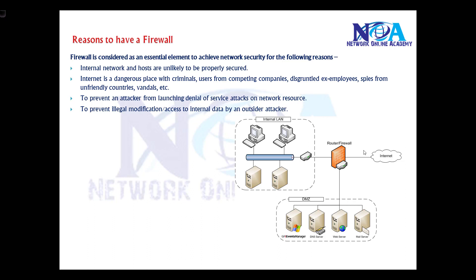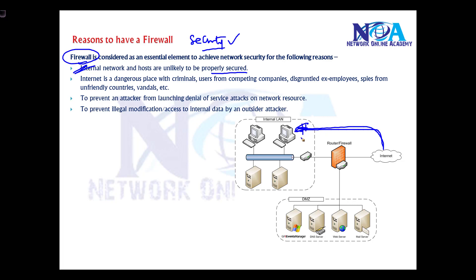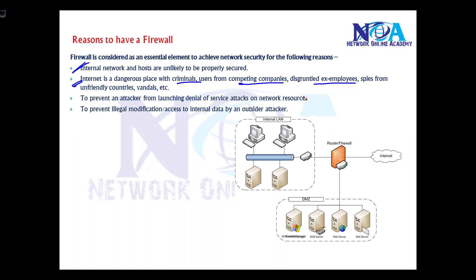There are multiple reasons for configuring a firewall. Every organization requires one because security is the most important concern, apart from maintaining the networks. All internal networks must be secured to ensure that traffic from the internet is not vulnerable. Any attacker should not be able to initiate traffic or access anything on the LAN or DMZs — unauthorized access must be restricted. The internet is a dangerous place with criminals, competing companies, ex-employees, and spies.